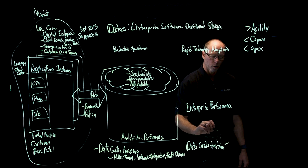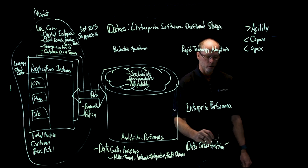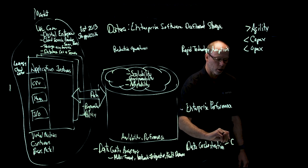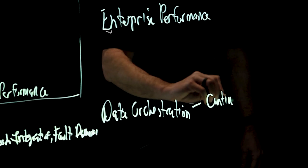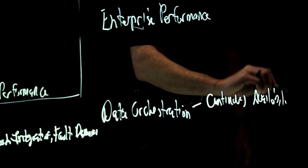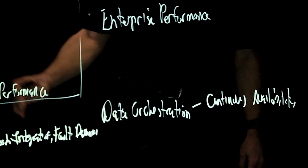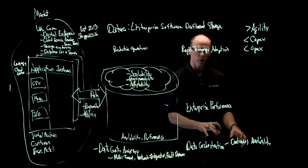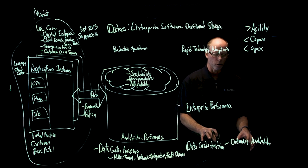For data orchestration, there's really two key attributes of this. First is continuous availability. We talked about availability as an enterprise storage attribute. This is an extension on that, where we also have to handle technology transitions, policy changes, and rapid growth.